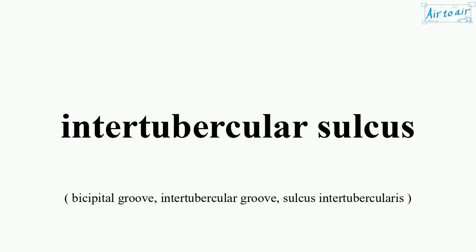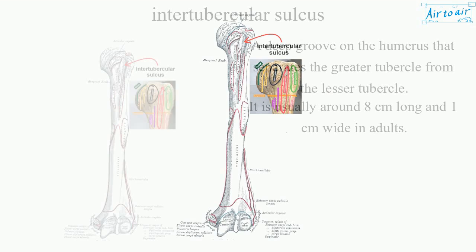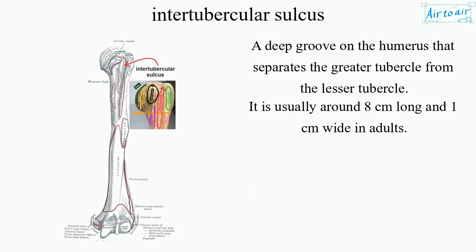Intertubercular sulcus. A deep groove on the humerus that separates the greater tubercle from the lesser tubercle. It is usually around 8 cm long and 1 cm wide in adults.